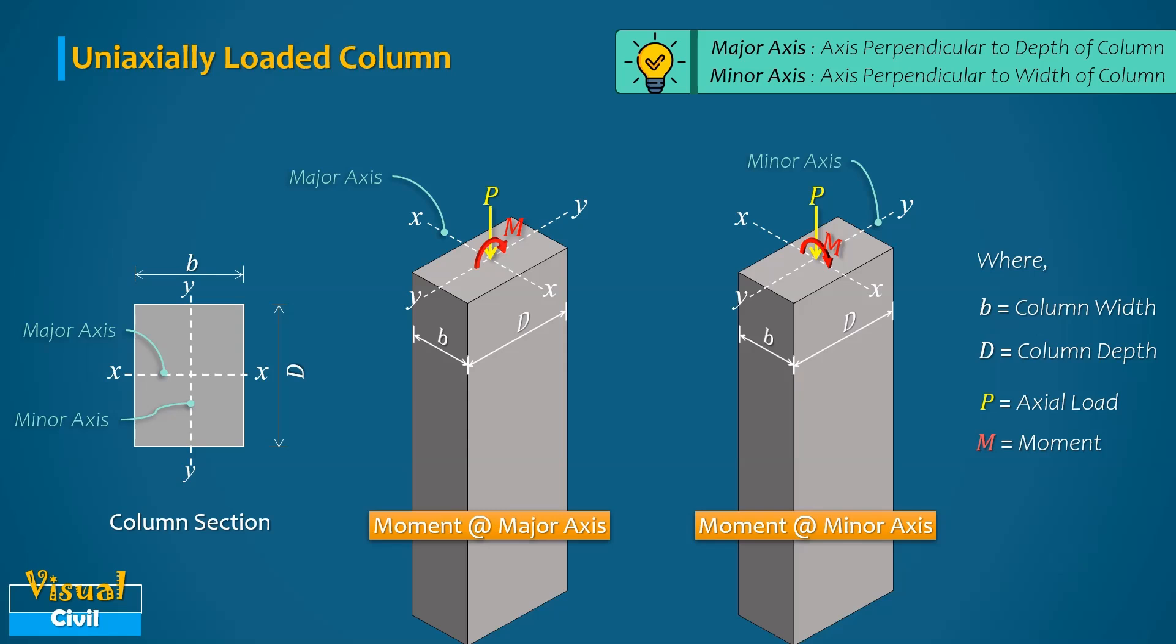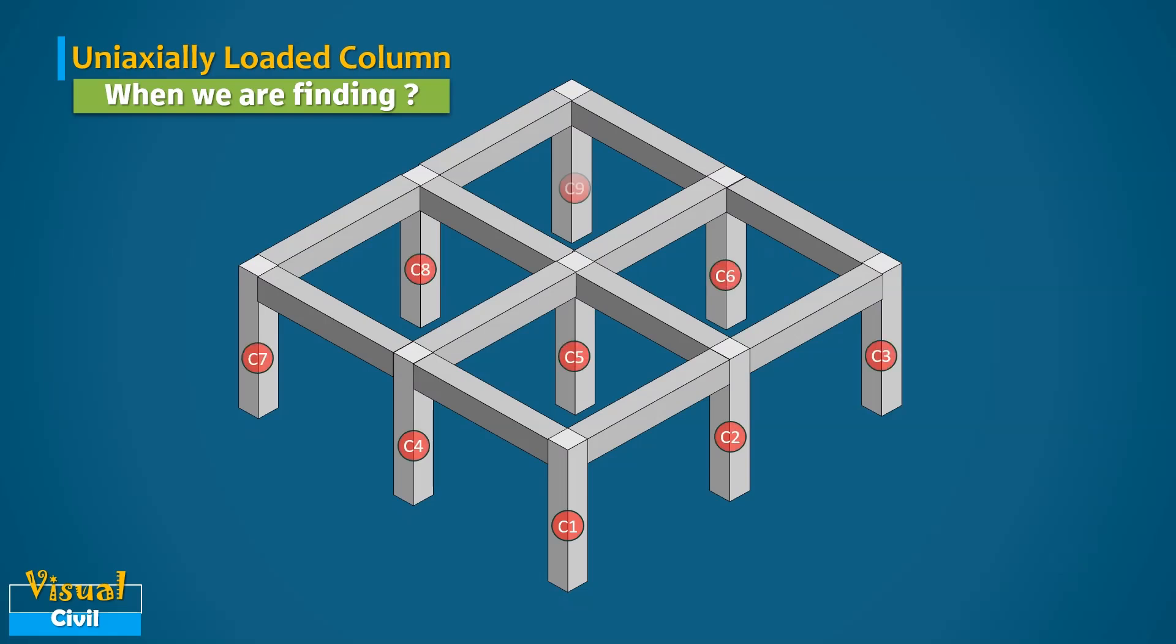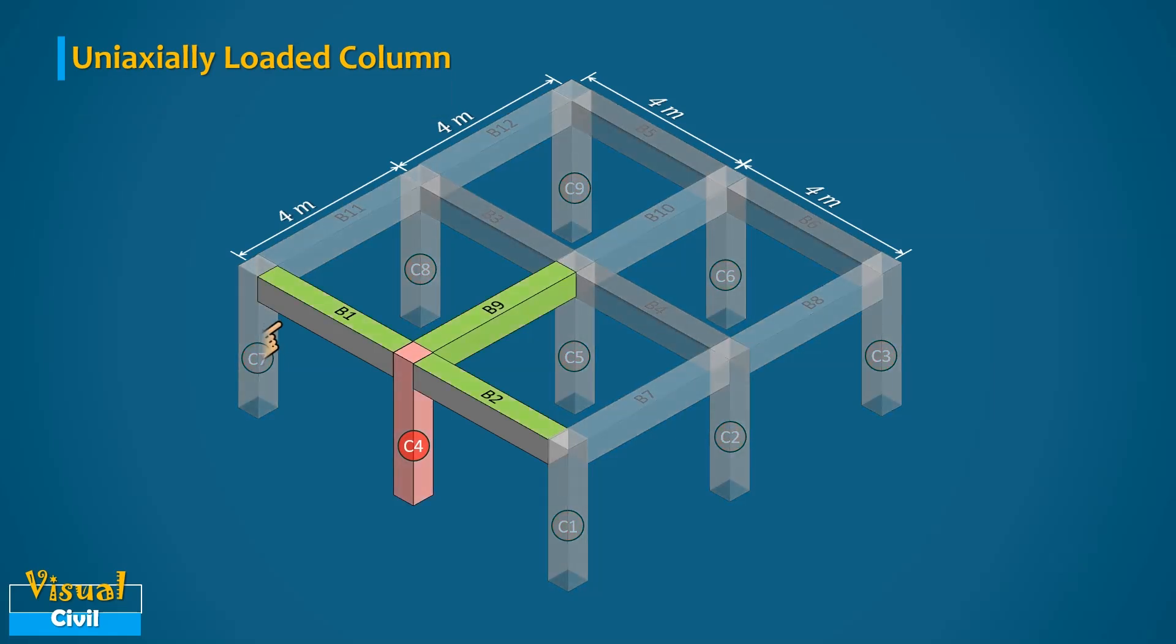When we are finding this type of column in building frame, let us try to find the answer by considering the same building frame which is earlier used to understand the axial loaded column. Consider the column C4 which is connected by three beams B1, B2 and B9.